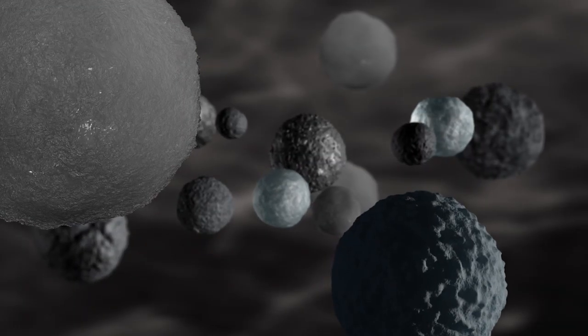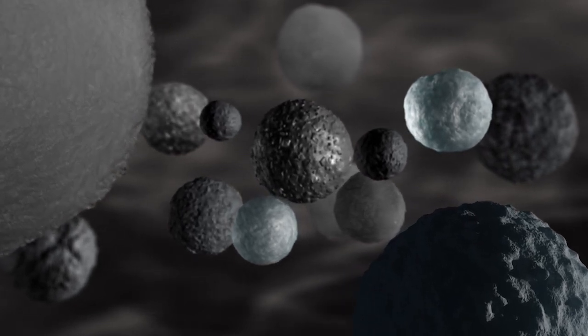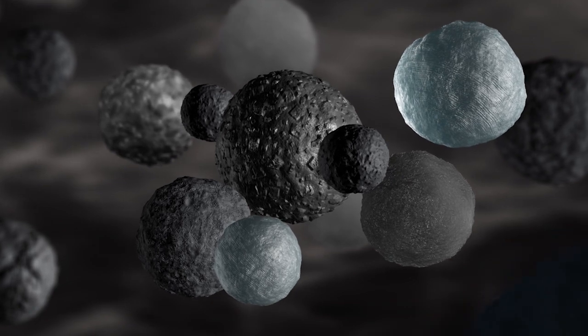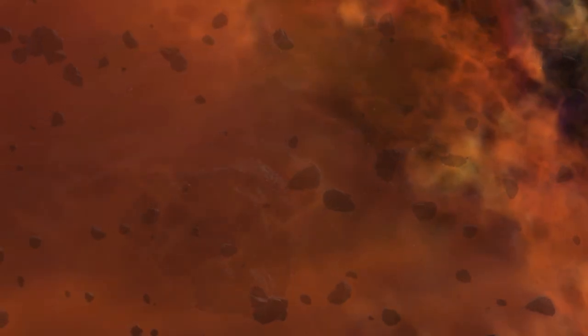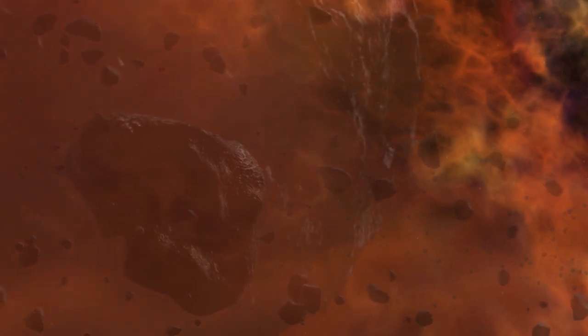Chondrules are destined to become the building blocks of the solar system. Coaxed by gravity and turbulence, the chondrules clump. They grow into the first asteroids, into mountains, into planets.